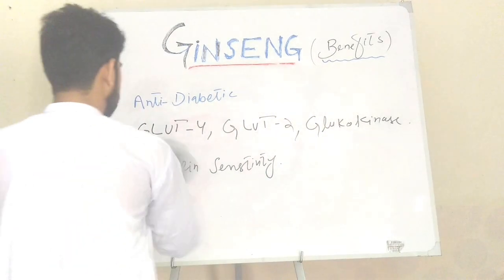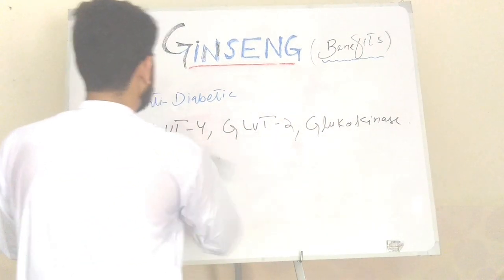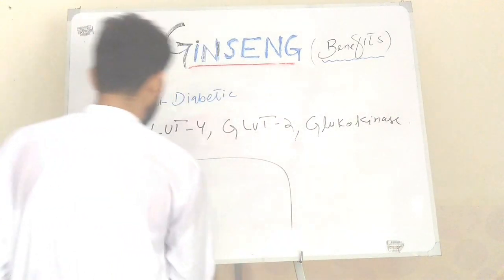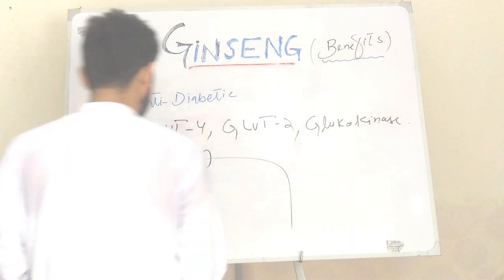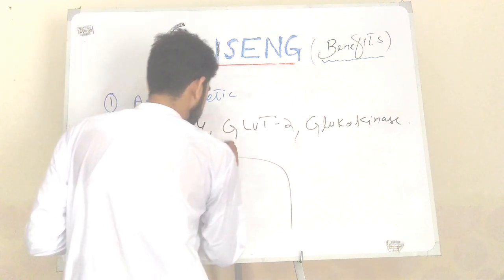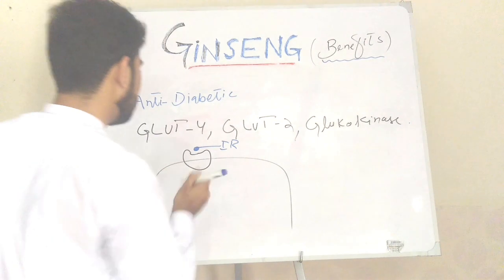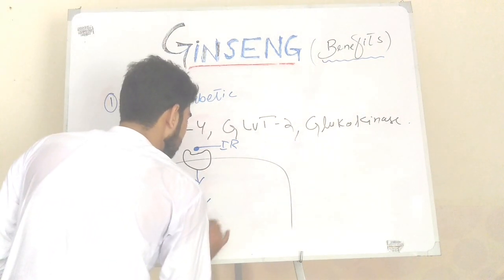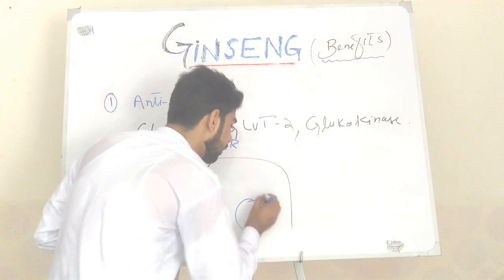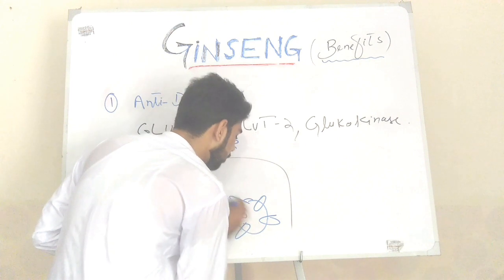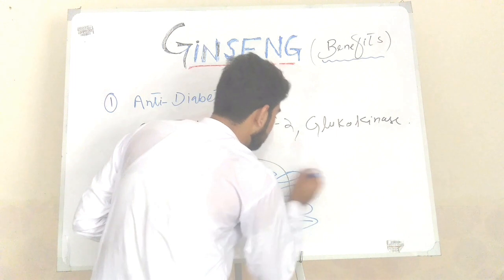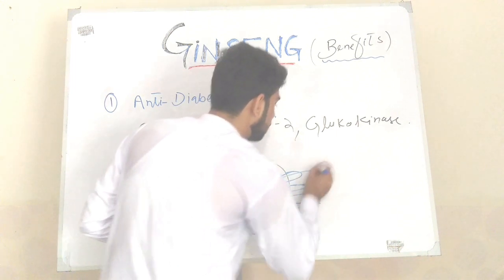When insulin binds with the insulin receptor on a cell, a series of signaling pathways starts that ultimately leads to translocation of GLUT4 vesicles from the cytoplasm into the cell membrane, which mediates the transport of glucose into the cell.